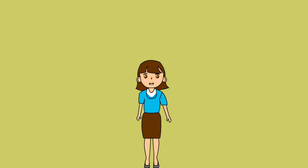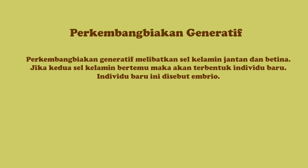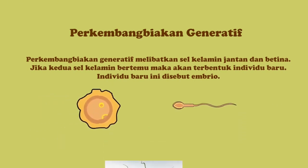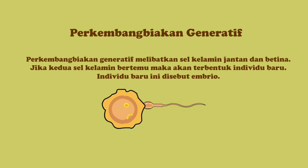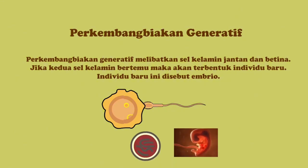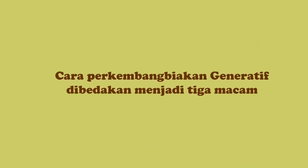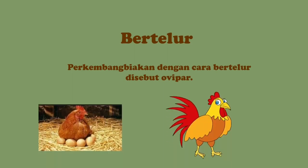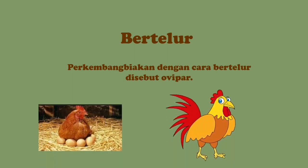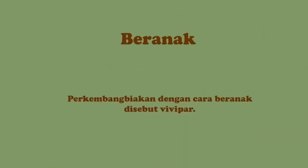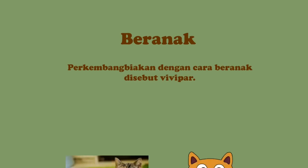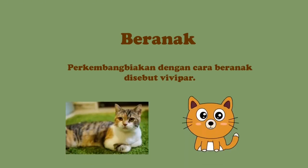Apakah teman-teman tahu apa itu perkembangbiakan generatif? Perkembangbiakan generatif melibatkan sel kelamin jantan dan betina. Jika kedua sel kelamin bertemu, maka akan terbentuk individu baru. Individu baru ini disebut embrio. Cara perkembangbiakan generatif dibedakan menjadi tiga macam.